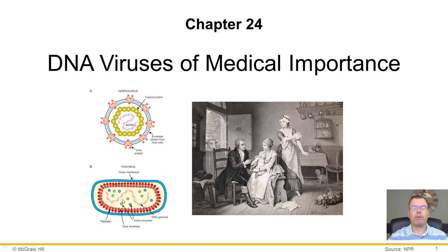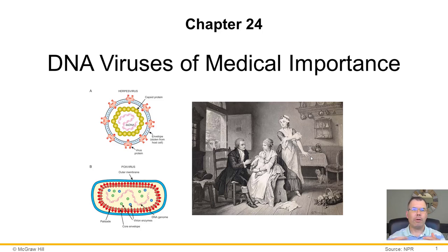Another virus of big importance is the pox virus. The picture here is a history lesson about really the first vaccination — this is Edward Jenner. He came up with the first vaccination, noticing that milkmaids were not getting infected by smallpox because they had cowpox, which tends to only infect their hands. Using scientific deduction, he figured out that exposure to cowpox could protect from smallpox — the idea of the first vaccine, in the late 1700s to early 1800s.